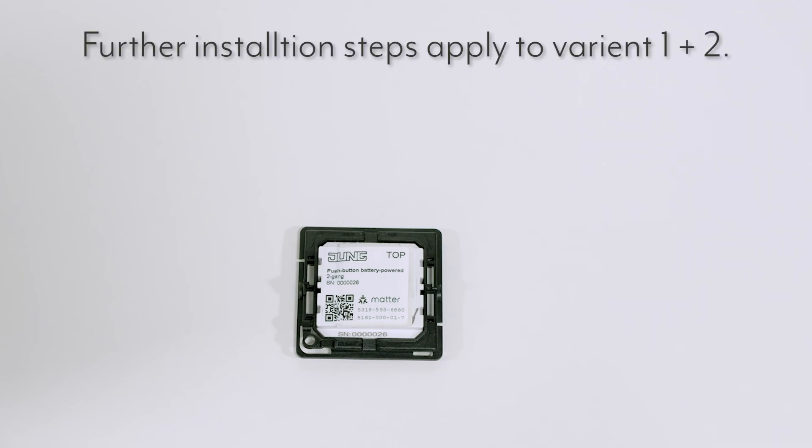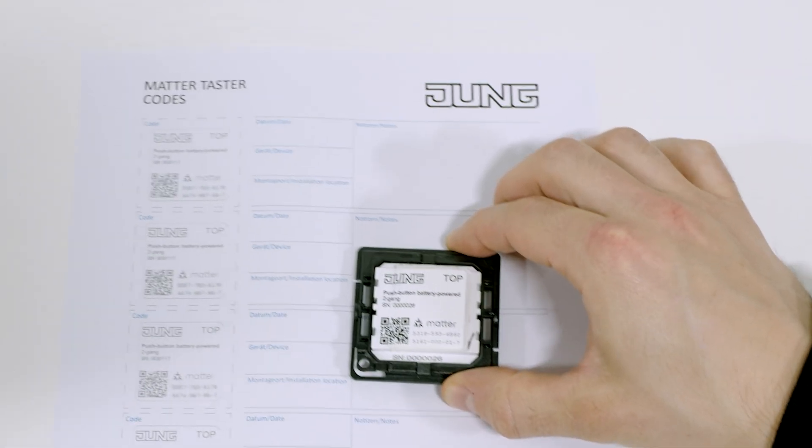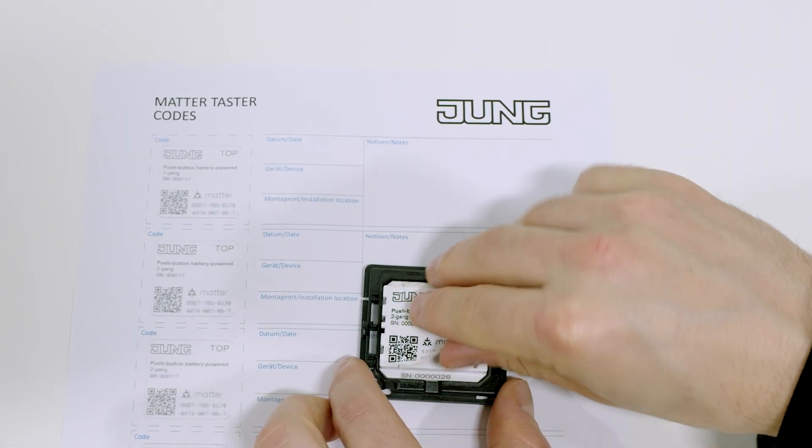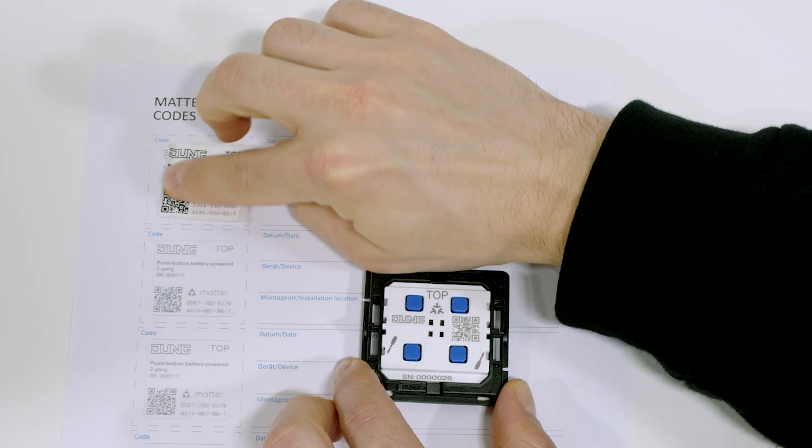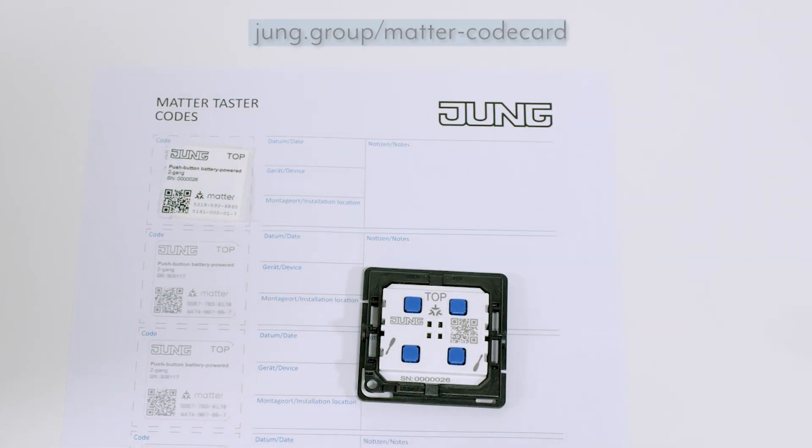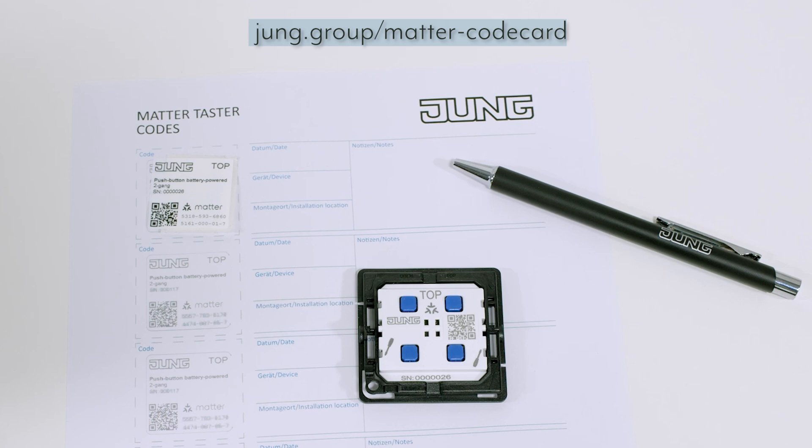All further installation steps apply equally to both installation variants. A primary code card is affixed to the radio module. Remove this code card and keep the QR code. We offer you our collection sheet for this purpose, which you can download from the following link.